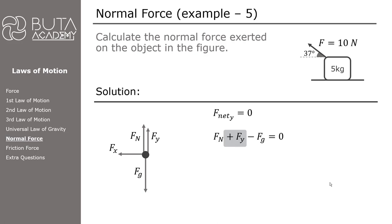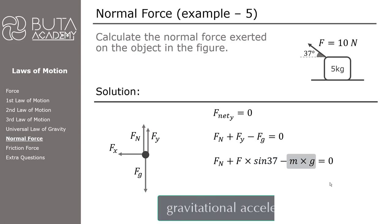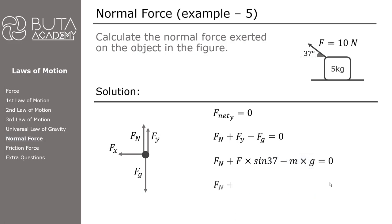This time Fy is going to have a positive value as well. The only force with a negative value, due to pointing downwards, is the force of gravity. Fy equals F times sin 37, and the force of gravity equals mass times acceleration. F is 10 Newtons, mass is 5 kilograms, and g is 9.8 meters per second squared.